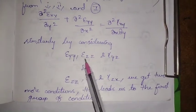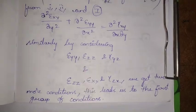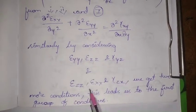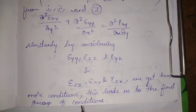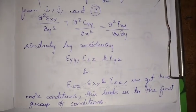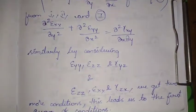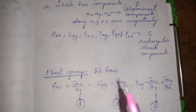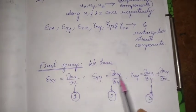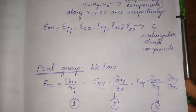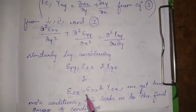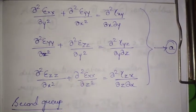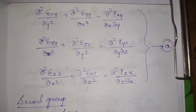Similarly, by considering epsilon yy, epsilon zz, and gamma yz for the second compatibility condition, and epsilon zz, epsilon xx, and gamma zx for the third, we get the remaining two equations in the first group. So the first group gives us three compatibility conditions based on epsilon xx, epsilon yy, epsilon zz, and the shear strains gamma xy, gamma yz, gamma zx.